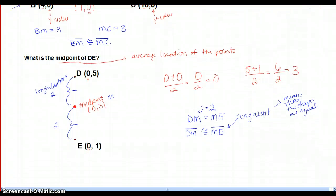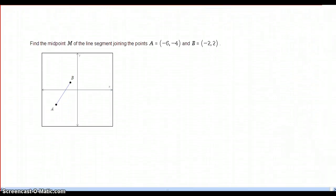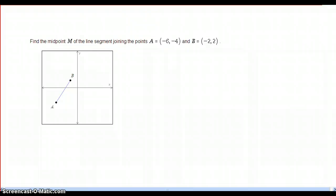Okay, so I want to show you one last example in regards to midpoint and using the congruent symbol. This is something you may have seen on Alex. So again, we want to find the midpoint, and that's the average location of the points. So if A is negative 6, negative 4, and B is negative 2, 2, you're going to think of this as two problems.